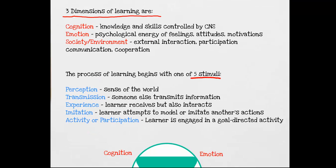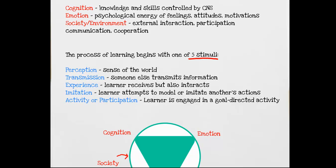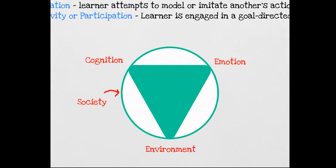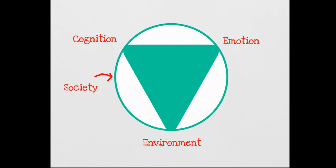The process of learning begins with one of five stimuli: perception, which is our sense of the world; transmission, where someone else transmits information to us; experience, whereby the learner receives but also interacts with the environment; imitation, where we attempt to model or imitate another's actions; and finally, activity or participation, where the learner is engaged in a goal-directed activity. This model is strong because it is comprehensive and also simple. But simultaneous and organic change occurs on all levels, meaning the diagram is in constant movement, with some areas taking in input while others are filtering information.